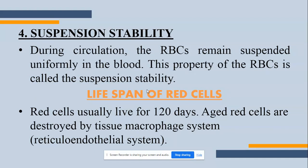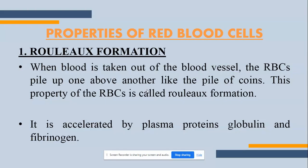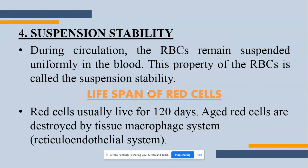Suspension stability: during circulation, the RBC remains suspended uniformly in the blood; this property is called suspension stability. The blood cells are somewhat heavy, but because of the properties of plasma and RBCs, they do not settle to the bottom — they spread and circulate uniformly throughout the body. So these were the four properties of RBCs: first, Rouleaux formation; second, specific gravity; third, packed cell volume; and last, suspension stability.